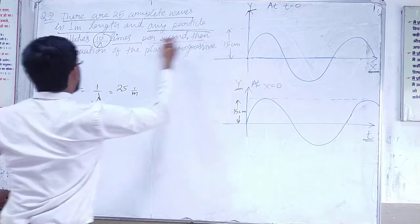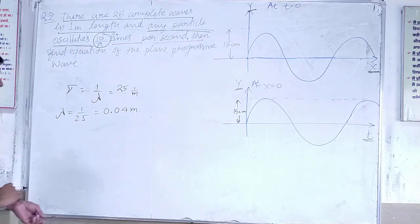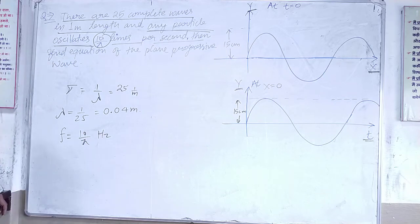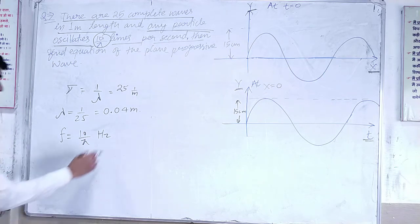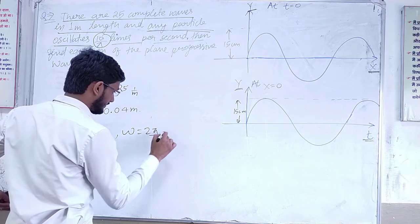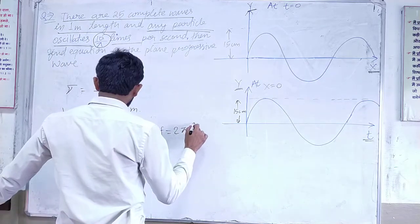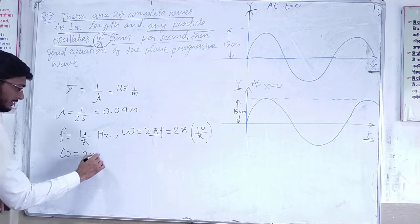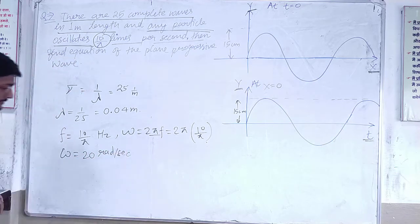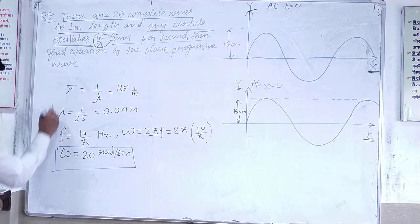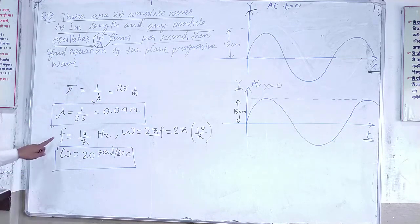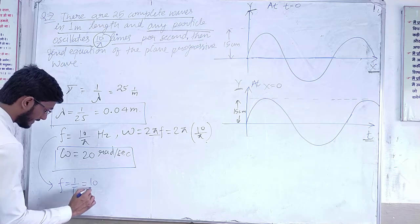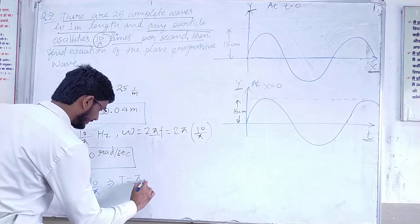Any particle oscillates 10/π times per second, so frequency is 10/π per second. Omega is 2π into frequency, so it will be 2π into 10/π, giving omega equal to 20 radian per second. This is omega and this is lambda. Time period T equals 1/f, which is equal to π/10 seconds.